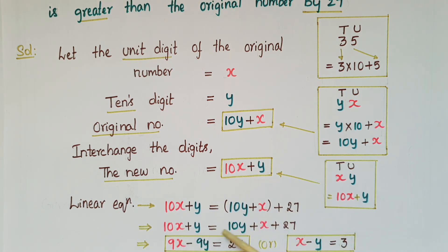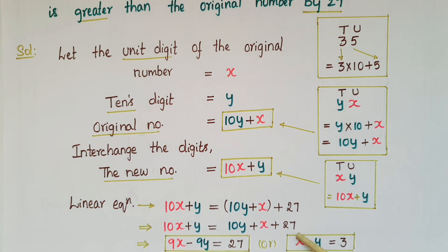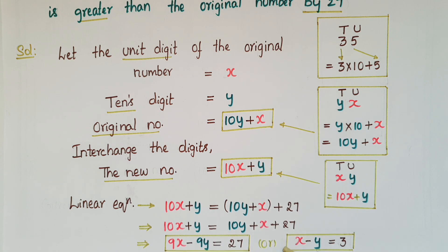Simplifying: 10x plus y equals 10y plus x plus 27, which gives 9x minus 9y equals 27, or x minus y equals 3.